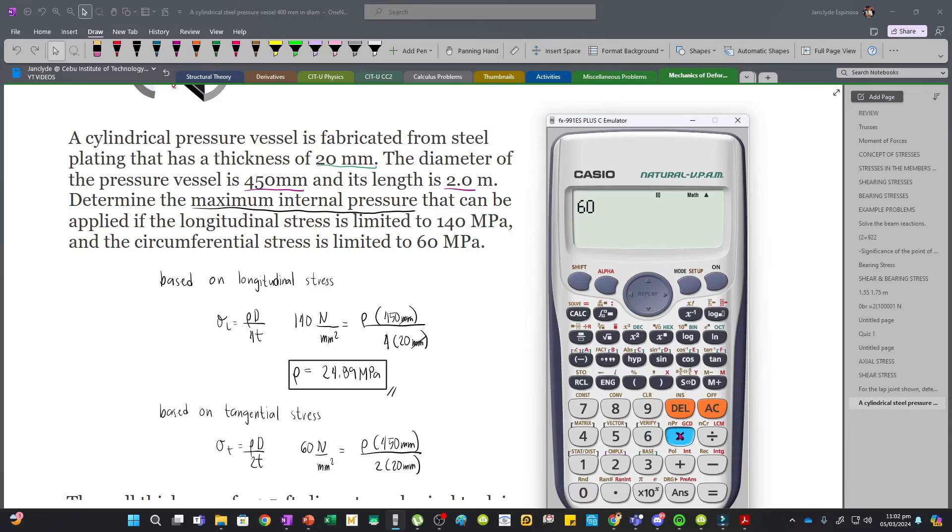So solving for P, we have 60 times 2 times 20 divided by 450, we have 5.33 MPa.